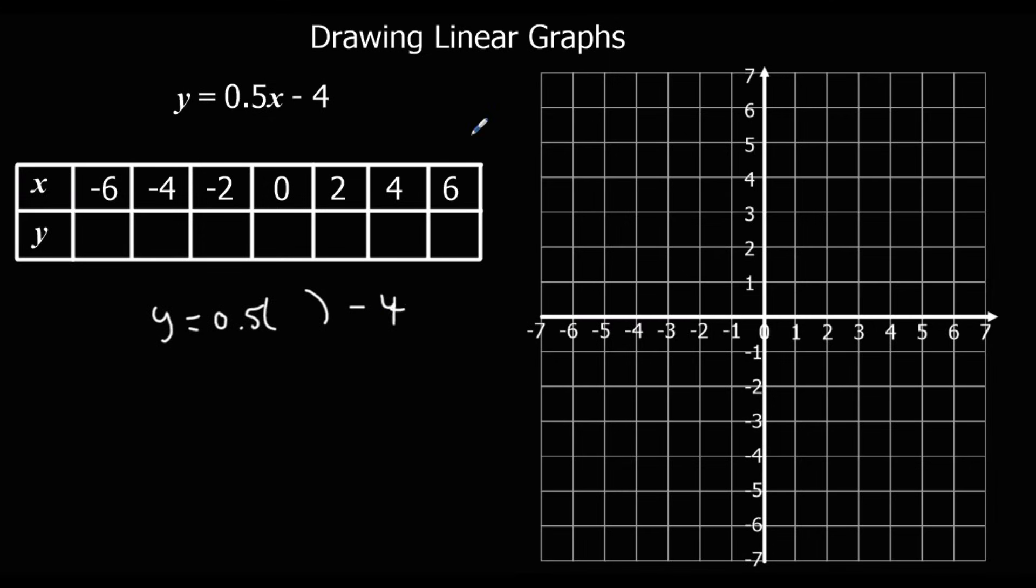So we can just substitute our numbers in. I'm going to start from the right again because it's easier to start with positive numbers. So half of 6 is 3. 3 take away 4 is minus 1. Half of 4 is 2. Take away 4 minus 2.